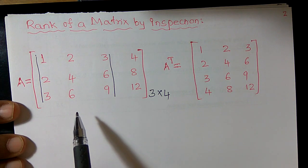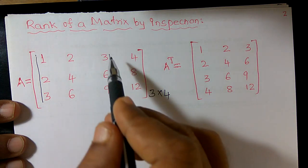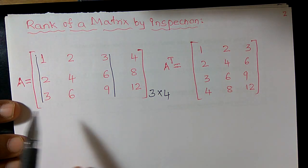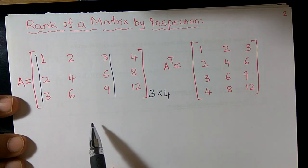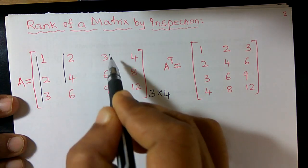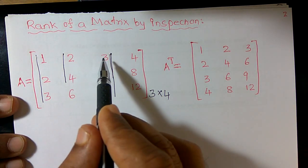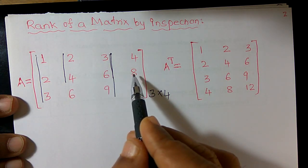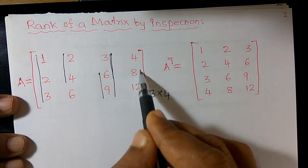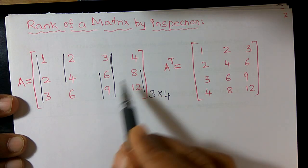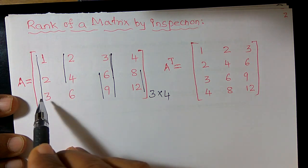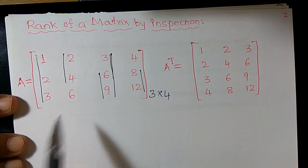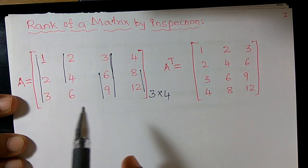Now consider minors of order 2. For example, 2, 3, 4, 6: 2×6 = 12, 4×3 = 12, so 12 minus 12 = 0. Another: 6, 9, 8, 12: 6×12 = 72, 8×9 = 72, so 0. Another: 2×6 = 12, 12 minus 12 = 0. Or 1×4 = 4, 2×2 = 4, also 0. All possible minors of order 2 are also equal to 0.